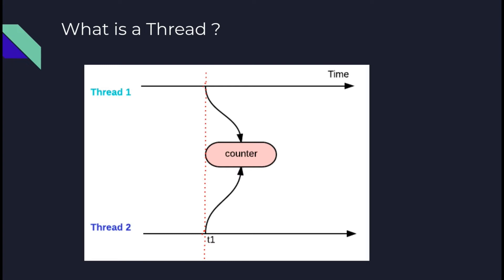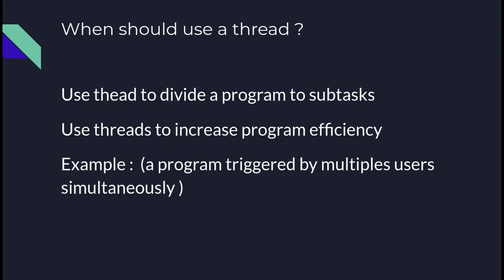For example, it's like reading or writing a file while you are handling an HTTP request on a server. When should you use a thread? Use threads for different use cases — for example, to divide your program into subtasks to make it more efficient. Consider an HTTP server or application server requested by different users at the same time, serving a lot of requests simultaneously. You can deal with this problem using threads, dividing your main program into sub-programs.